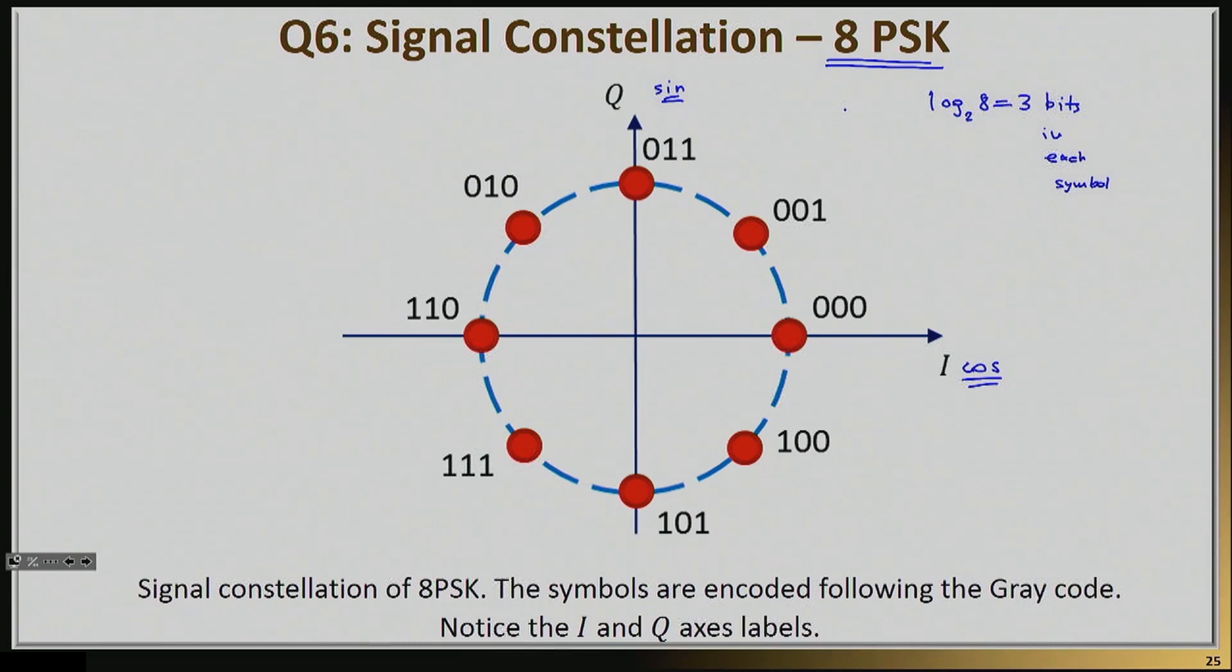interference, and corruption, and all of the other things, it will get a signal somewhere here, and it will say, okay, if this is the signal that I received, with this much magnitude and cosine and sine, what is the most likely symbol that the transmitter actually sent me?